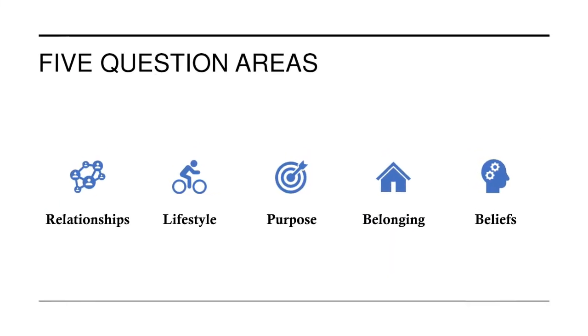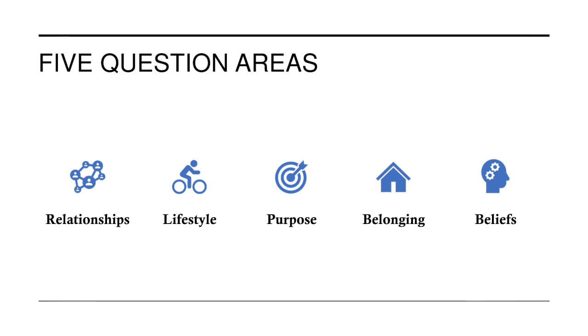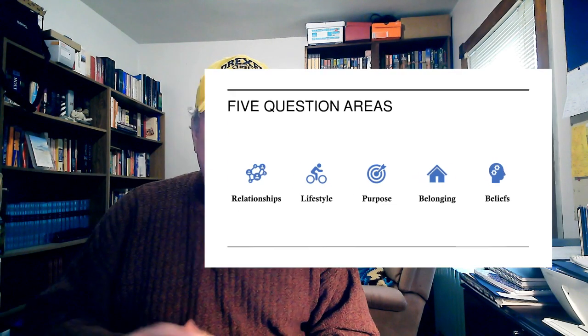There are these five question areas that we believe life revolves around. People are asking questions about relationships, who loves me, who should I love, how should I treat everybody. Lifestyle, what is the good life, what kind of life ought I be trying to have. Purpose, I have a limited amount of resources, how should I spend them. Belonging, where do I fit in, where can I call home. And beliefs, not only what is true, but who do I trust.